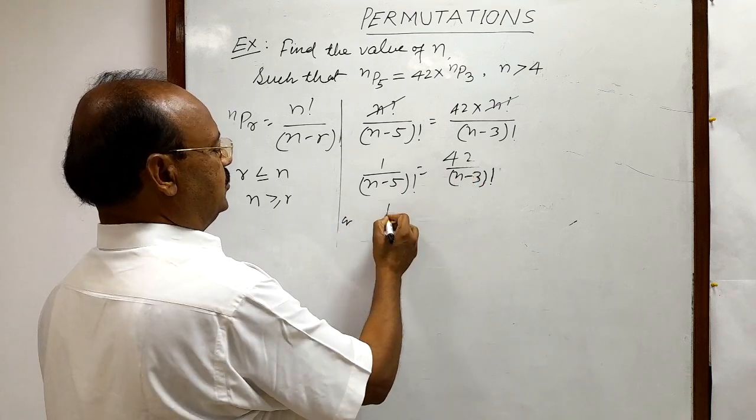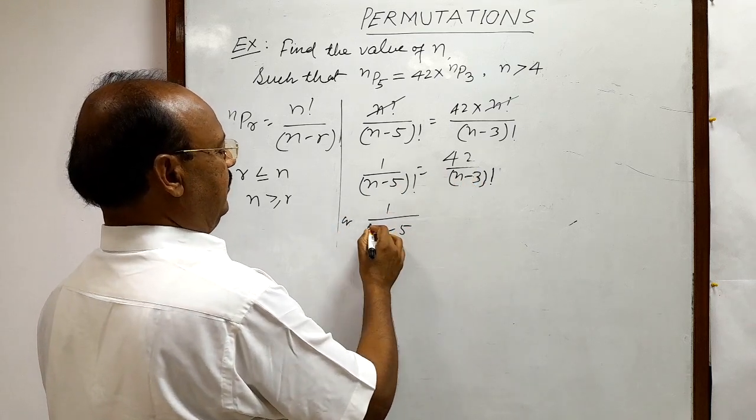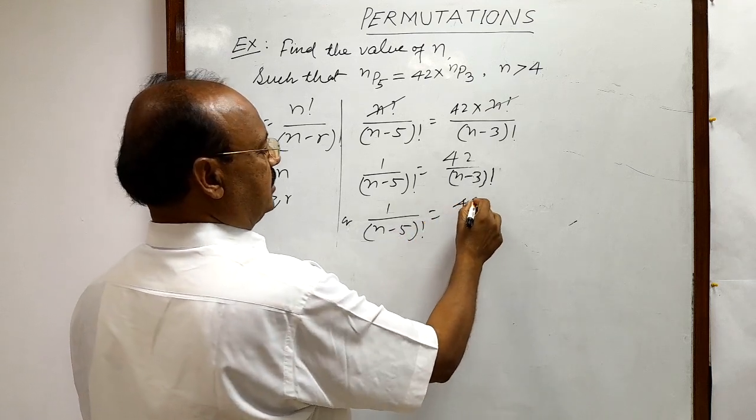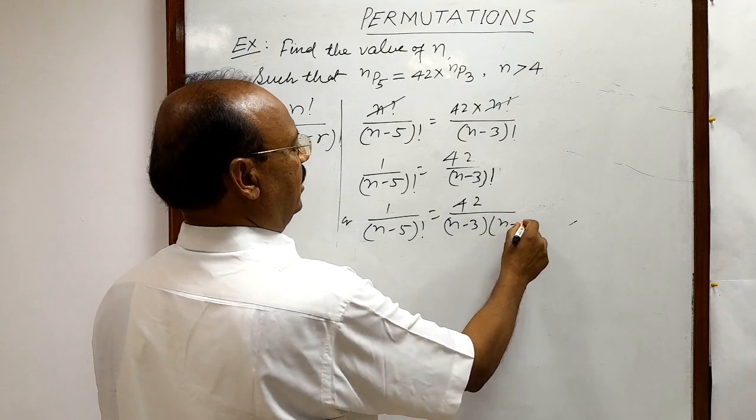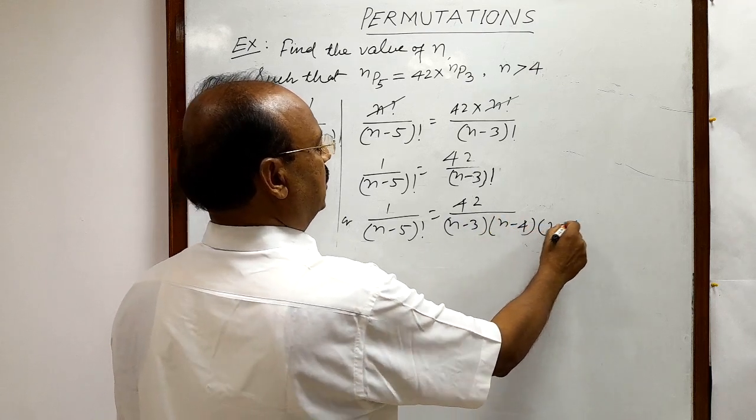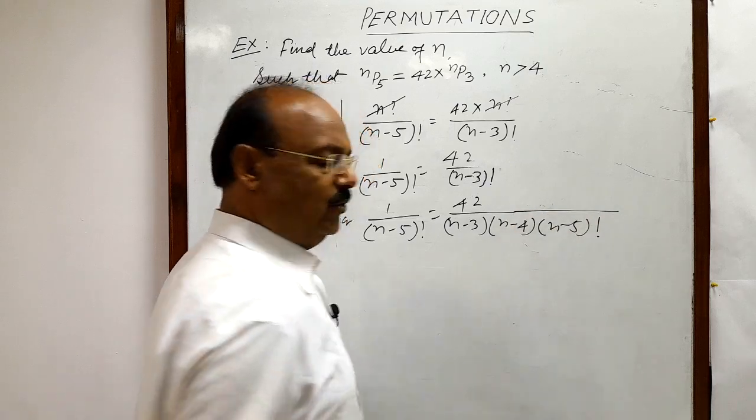We can write here, this is 1 by N minus 5 whole factorial. And here in the right hand side, this is 42 by N minus 3 into N minus 4 into N minus 5 whole factorial.